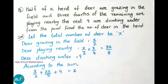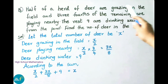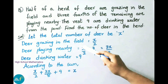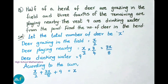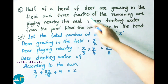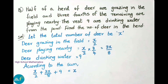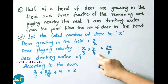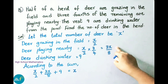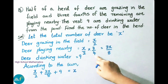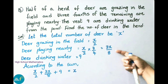Let the total number of deer be x. They have given half of the herd are grazing in the field, so deer grazing equals x by 2. For deer playing nearby, three-fourths of the remaining half are playing, so that is x by 2 into 3 by 4, which equals 3x by 8.